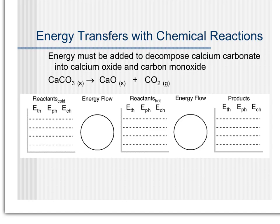This first example says energy must be added to decompose calcium carbonate into calcium oxide and carbon dioxide. Because energy must be added, we're going to think about energy as if it is a reactant. So I'm going to write energy on the reactant side of my equation. That is going to be true for any endothermic reaction where energy is coming into the system.